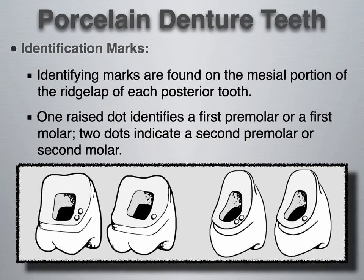There are sometimes identification marks on denture teeth. Identifying marks are found on the mesial portion of the ridge lap of each posterior tooth. One raised dot identifies a first premolar or first molar, while two dots indicate a second premolar or second molar. This is common among different manufacturers, however not all manufacturers practice this within their denture teeth characteristics.